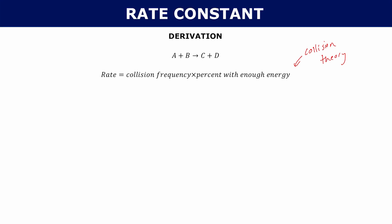The collision frequency is sigma times the mean relative velocity times Avogadro's constant squared times the concentration of A and B. This comes from the kinetic model of a gas — let's talk about what all these symbols mean.